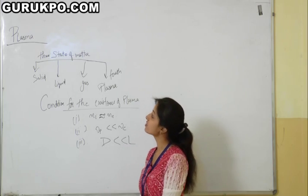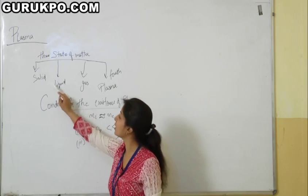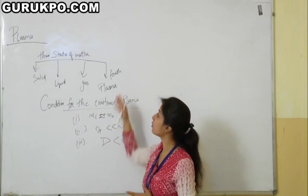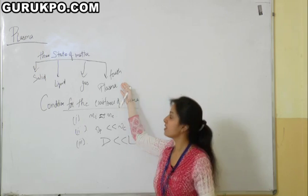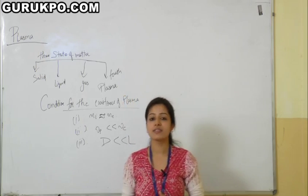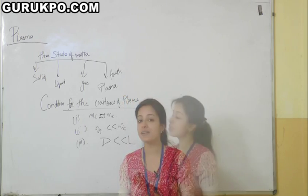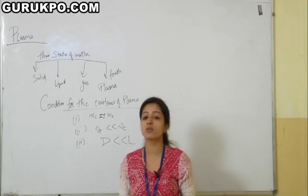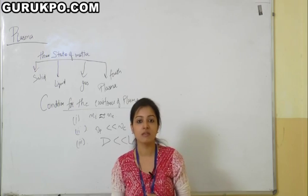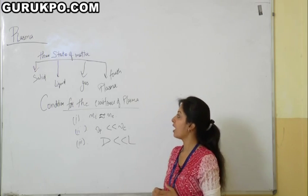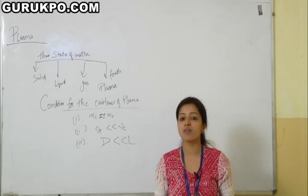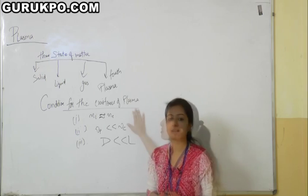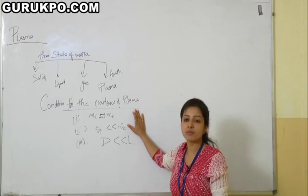We know that the three states of matter are solid, liquid, and gas. Recently it was found that the fourth state of matter is plasma. Plasma is generally an ionized gas with a sufficiently high density. The gaseous particles interact with each other with a force known as coulomb electrostatic force. It is also a mixture of positive ions, electrons, and neutral particles with high density. In the series of plasma, there should be three conditions.